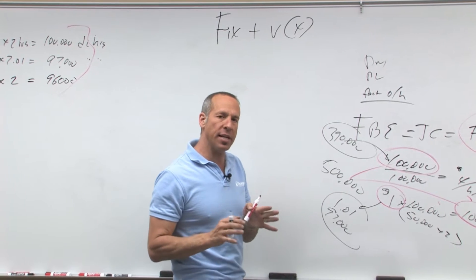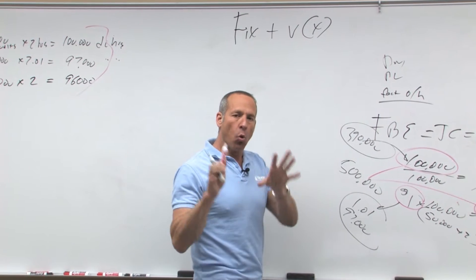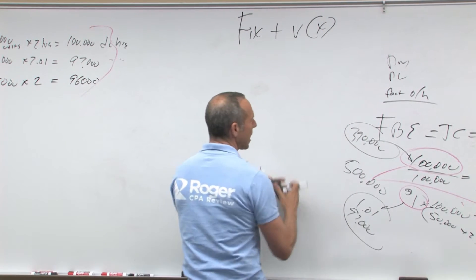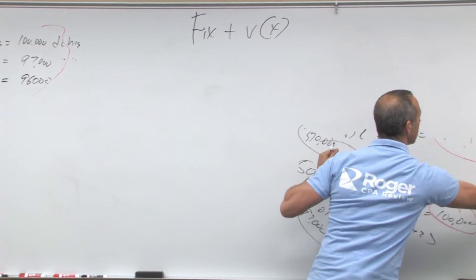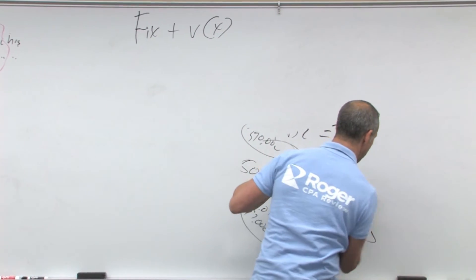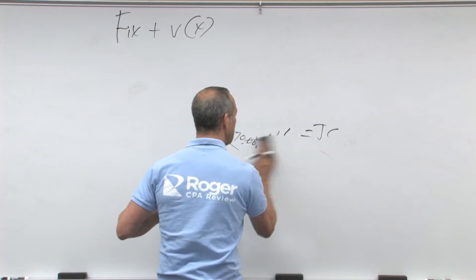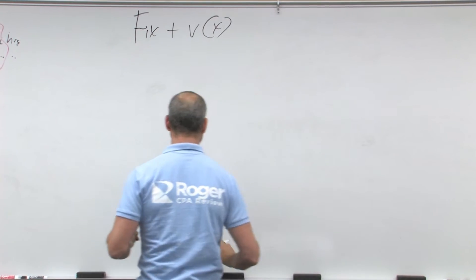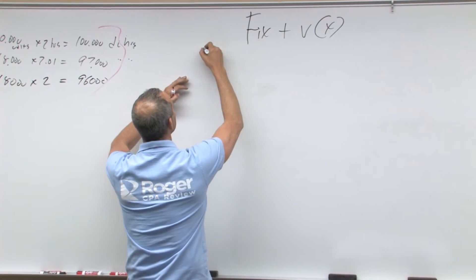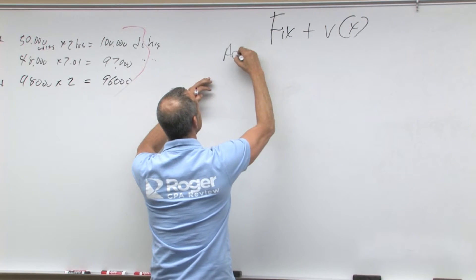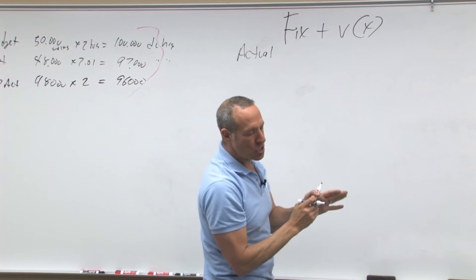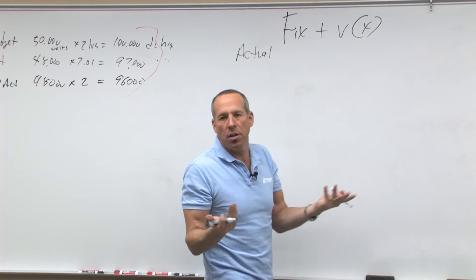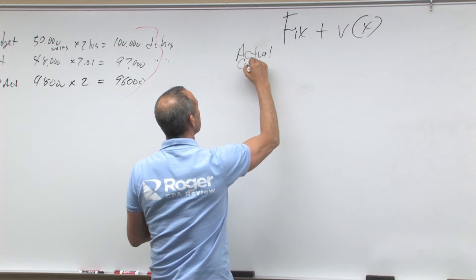When we do variance analysis, we're going to use four different numbers. As we work across, we're going to be looking at four different things, because we've got to compare four numbers to come up with three variances. We're going to start with actual, because actual is always given, so we can start with actual cost.